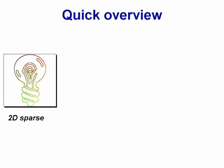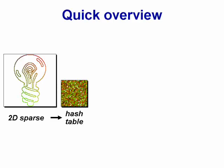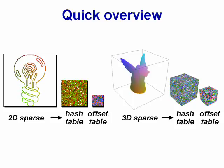Our perfect hashing scheme packs sparse spatial data into a dense hash table. The hash function is defined using a single access to a small offset table. Our scheme generalizes to higher dimensional domains.